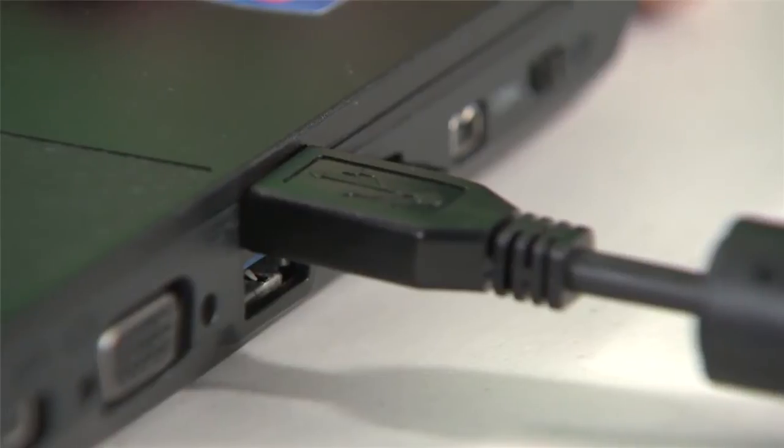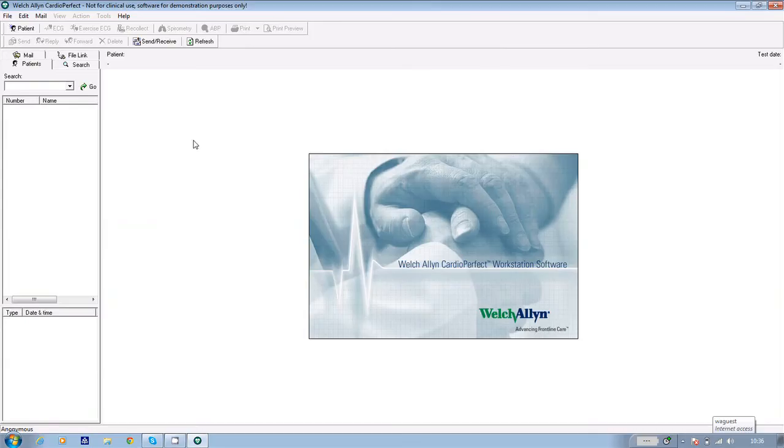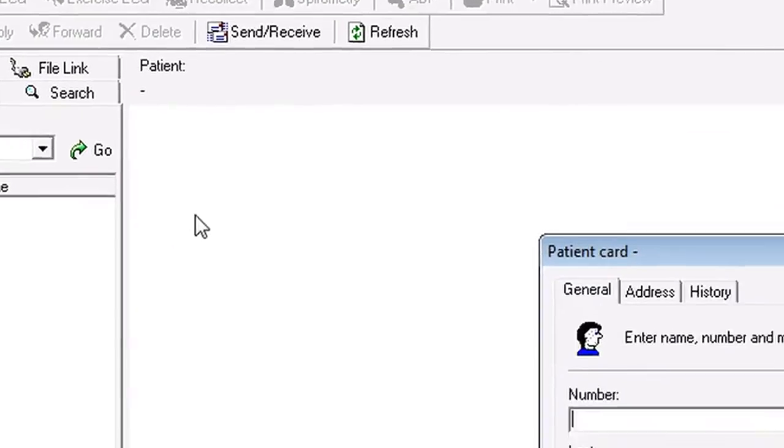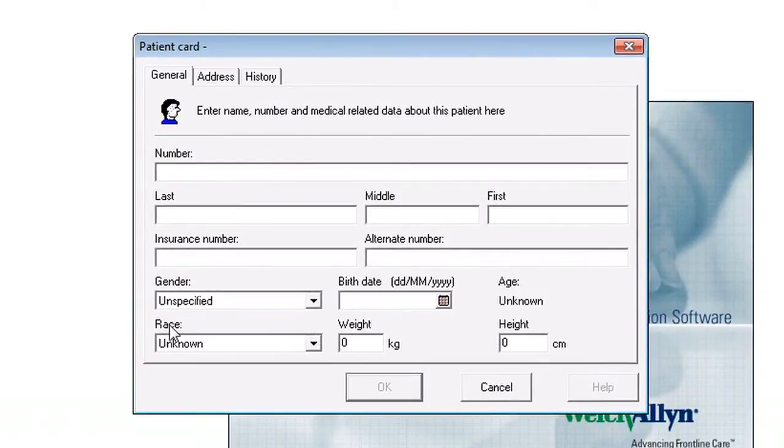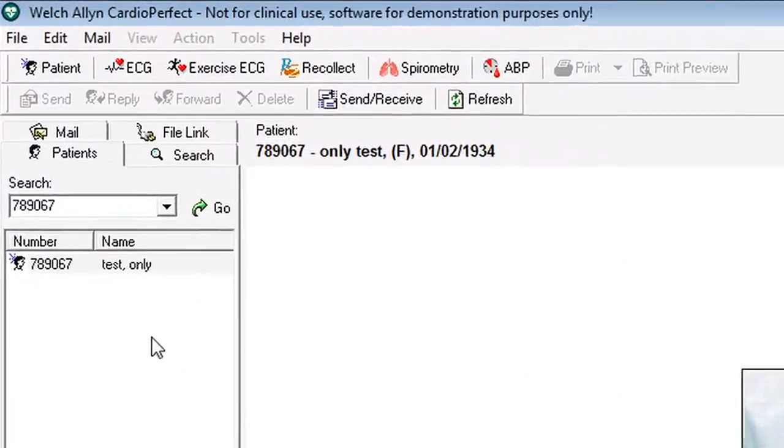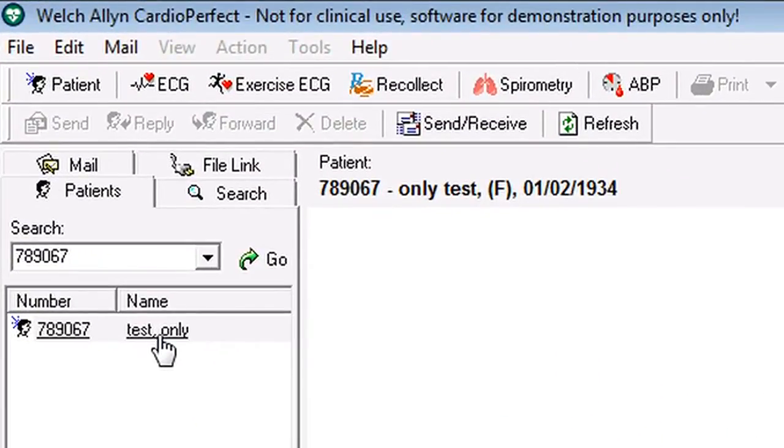Now connect the USB cable to your PC and go into the Cardio Perfect software. Double click on the icon. And if the patient hasn't had an ECG before, click on patient in the top left hand corner of the screen. When the patient record card appears, fill in the patient ID number, NHS or other, the last name, the first name, the gender, and the birth date. And then click OK. Their details go into the memory and they'll be there next time the patient comes in for another test.